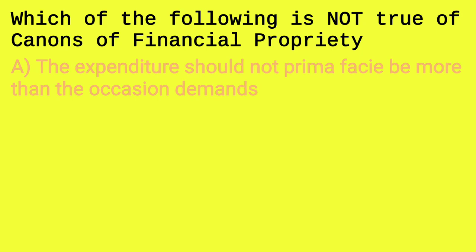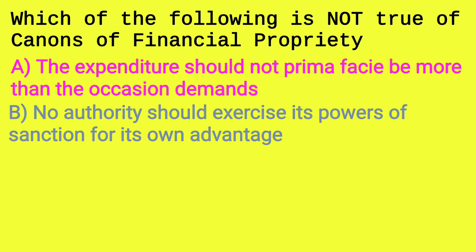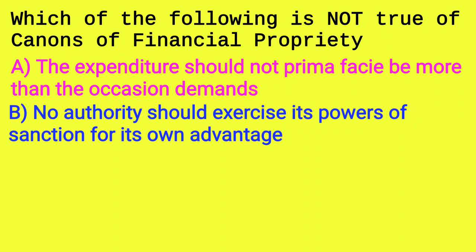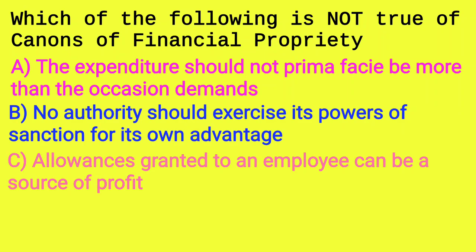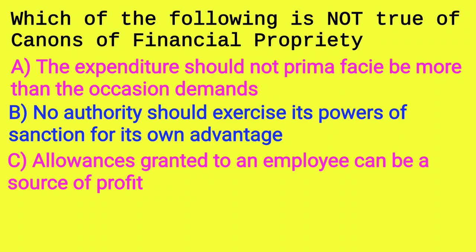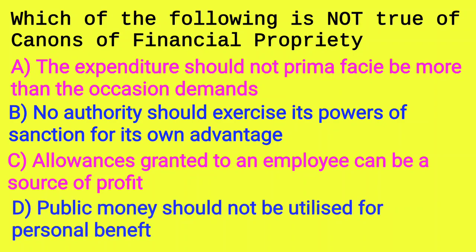Which of the following is not true of canons of financial propriety? Option A: the expenditure should not prima facie be more than the occasion demands — correct. Option B: no authority should exercise its power of sanction for its own advantage — correct. Option C: allowances granted to an employee can be a source of profit — incorrect. Option D: public money should not be utilized for personal benefit — correct. The answer is C — allowances cannot be a source of profit.